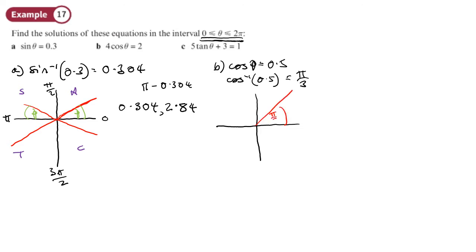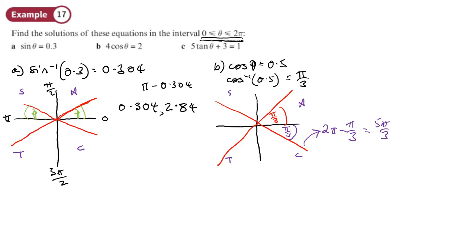So π/3 goes in the first section of the CAST diagram. Draw the cross: C, A, S, T. It lands in the first section where all are positive. We're finding cos — where else is cos positive? Over in the C section. So the other angle is 2π minus π/3, which is like doing 2 minus a third, giving 5π/3. So the answers are π/3 and 5π/3.